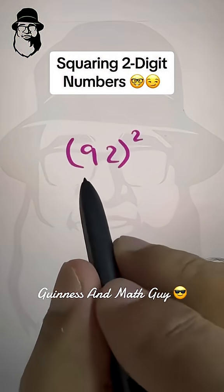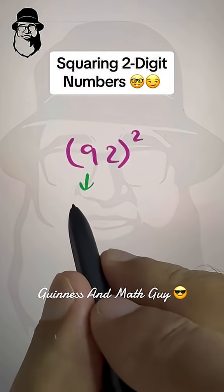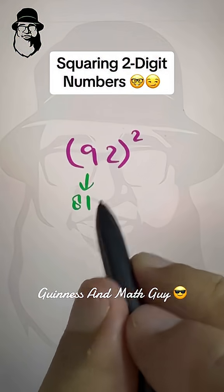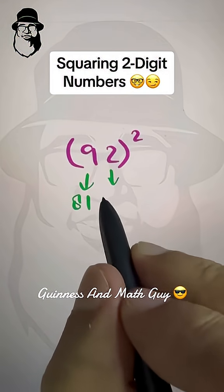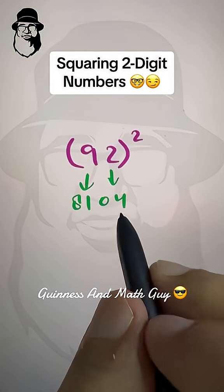Let's do this one. Square of 9 is 81, square of 2 is 4, but we write 04 because we have two spaces.